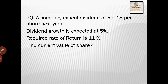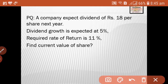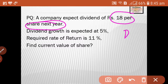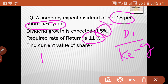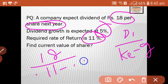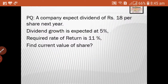This next question is to be calculated by you: A company expects a dividend of Rs. 8 per share next year, so D1 = Rs. 8. The dividend growth rate is expected at 5%, G = 5%. The required rate of return is 11%. Calculate the value: P0 = 8 / (0.11 - 0.05). You calculate the value, and if you have any problem, send a WhatsApp message.